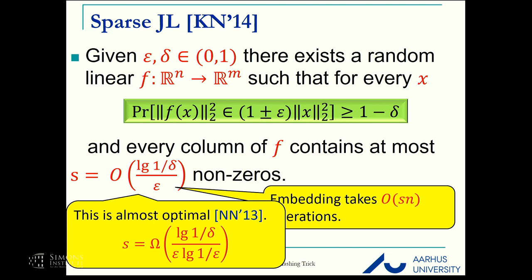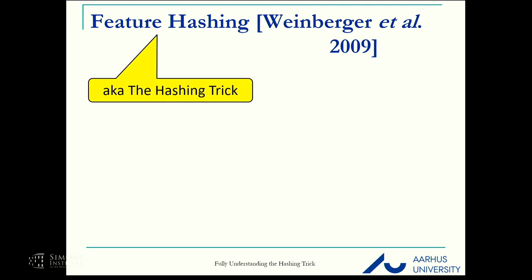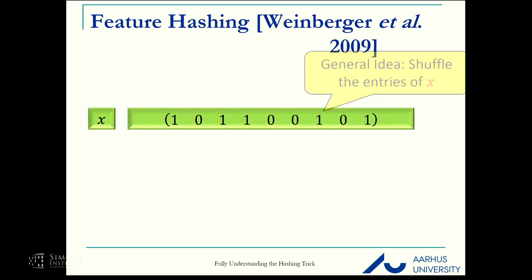This means we can embed much faster. And this is almost tight. Nguyen and Nelson showed that s has to be at least log(1/delta) over epsilon with another log(1/epsilon) factor. So do we have hope to do anything better? Apparently we do. Apparently in practice, Weinberger and Adal in 2009 introduced feature hashing, also known as the hashing trick.